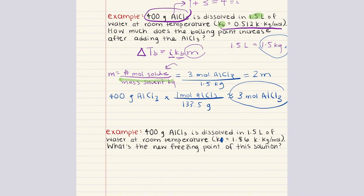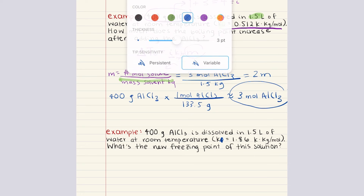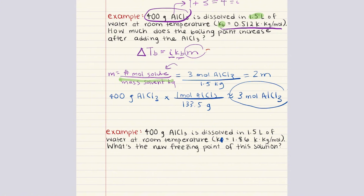For the numerator, we're given 400 grams of aluminum chloride and need to convert to moles using molar mass. One mole of aluminum chloride equals 133.5 grams, giving us approximately 3 moles of aluminum chloride. So molality equals 3 moles divided by 1.5 kilograms, giving a molality of 2. Now we can plug everything back into our boiling point elevation equation: delta T_b equals 4 times 0.512 times 2, giving us a final answer of 4.1 Kelvin. So the boiling point increases by about 4.1 Kelvin.